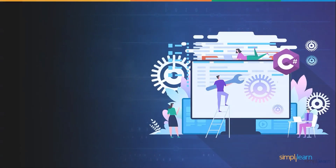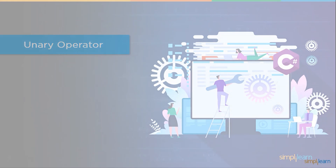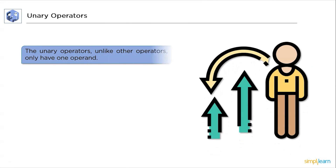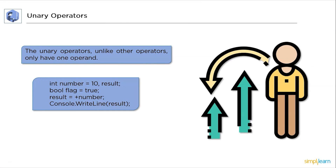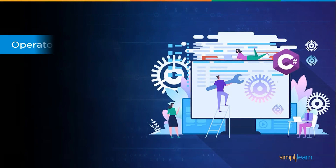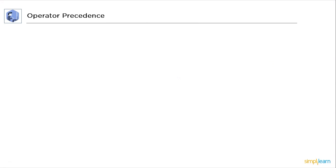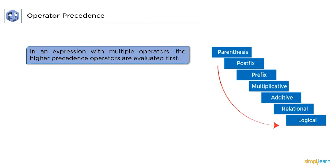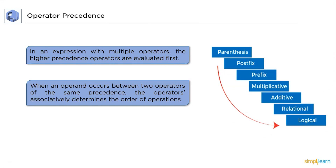At last, unary operators. The unary operators, unlike other operators, have only one operand, and here is the syntax for that. Now let's discuss operator precedence. In an expression with multiple operators, the operators with the highest precedence are evaluated first. When an operand is between operators of the same precedence, the order of operation is determined by associativity with the operator.